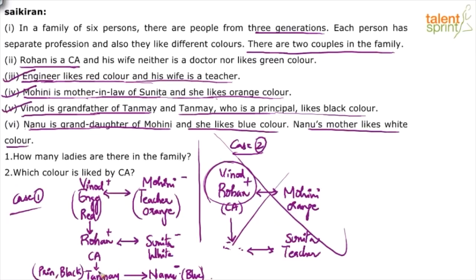All six persons — Vinod, Mohini, Rohan, Sunita, Tanmay, and Nanu — are now identified. Do we know Tanmay's gender? We know Vinod-Mohini are a married couple, Rohan-Sunita are a married couple, and Nanu is a granddaughter — so Nanu is female. But Tanmay's gender is not determined; Tanmay could be a female child as well.